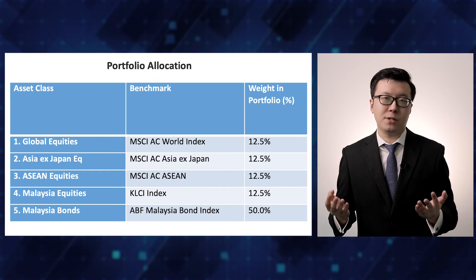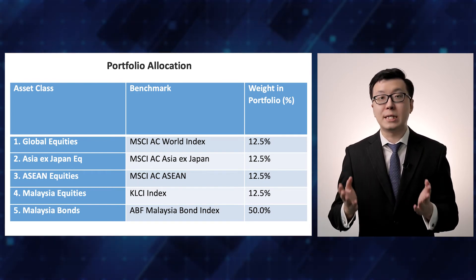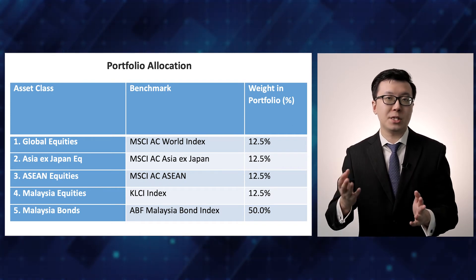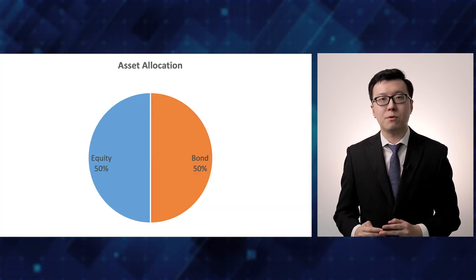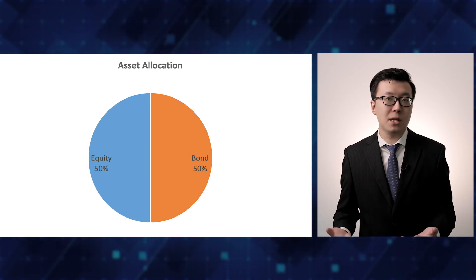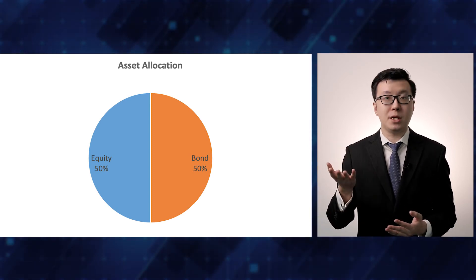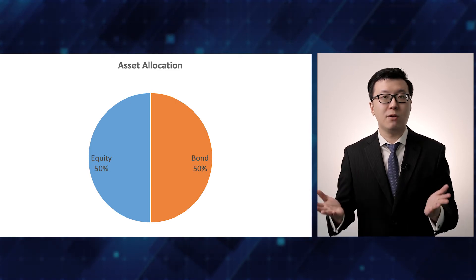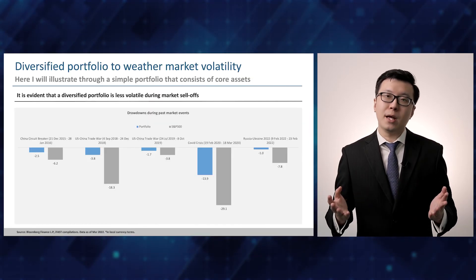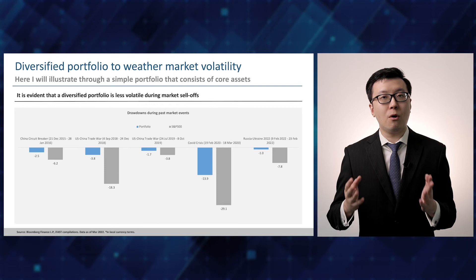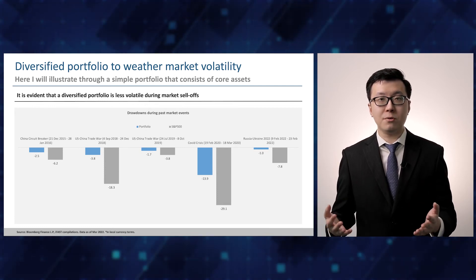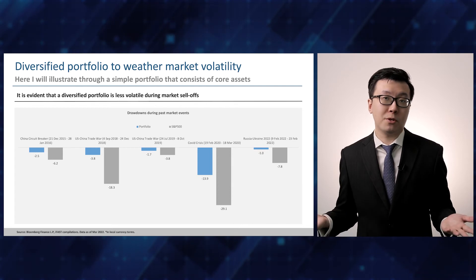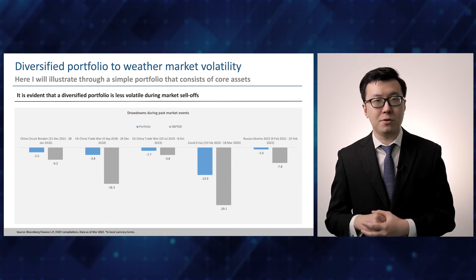Here I'll illustrate the benefits of diversification through a simple portfolio that consists of core assets such as the below. This will result in a diversified balanced portfolio with 50% in equities and 50% in bonds that's less volatile. Then I shall backtest this portfolio over a few crucial market downturns in the past and compare the portfolio versus notable equity benchmark, the S&P 500 index.